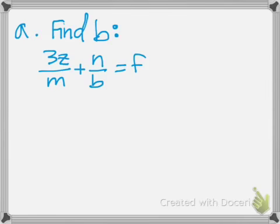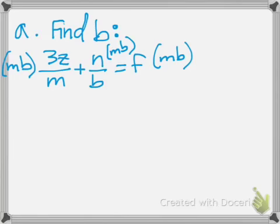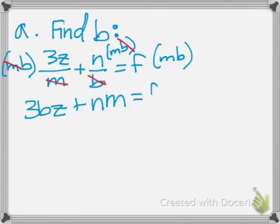First thing we need to do is get rid of those denominators, so we're going to multiply by mb. Multiply everything by mb, and then we'll cancel. So, on the top we get 3bz plus nm equals fmb.